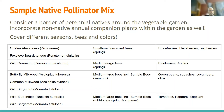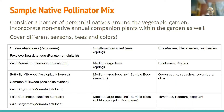Wild blue indigo — Baptisia australis — as well as wild bergamot, flower in mid to late spring and summer to help with tomatoes, peppers, and eggplant. So really the strategy here is: bring in a lot of different kinds of bees, bring them in at different times of the year, put in a lot of colors, and make sure the plants have different sizes.